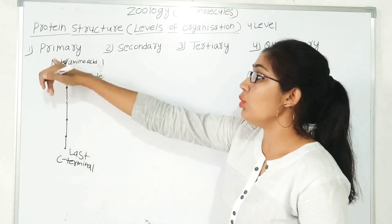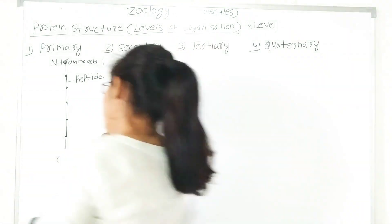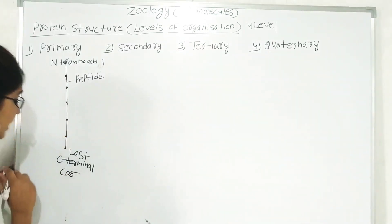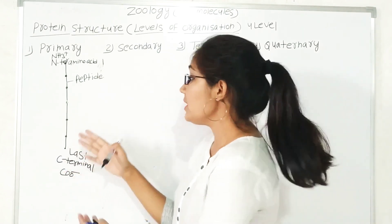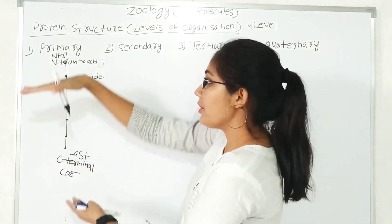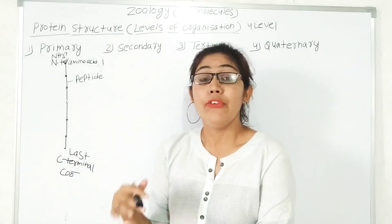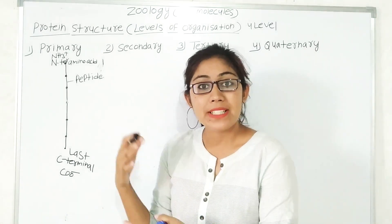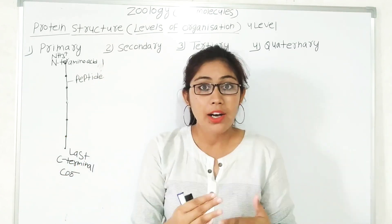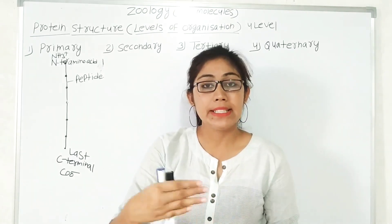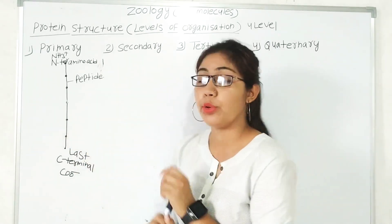The first end is called the N-terminal because the amino group is the first group present at that end. The last end is called the C-terminal because the carboxyl group is present there. So this is a straight chain of amino acids: N-terminal at the first end, C-terminal at the last end. The sequence information for further folding — into secondary, tertiary, and quaternary levels — is stored in the primary structure.